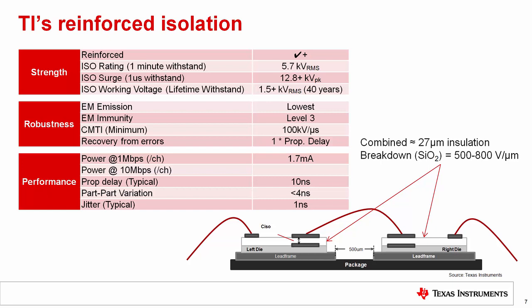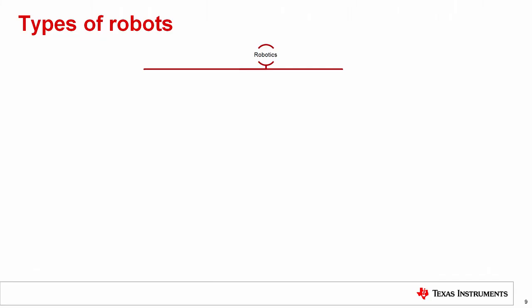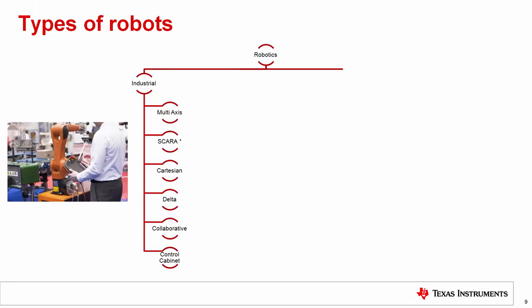Furthermore, TI devices have low current consumption and signal is transferred very quickly within a few nanoseconds. Regarding types of robots: if we split robotics into different categories, first there are industrial robots — including multi-axis, SCARA, Cartesian, Delta, collaborative, and control robots. A control cabinet is needed for every industrial robot, normally located underneath or next to the robot.